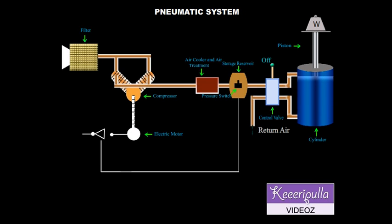In the raised position of the control lever, the bottom port is connected to the pressure line. The piston moves up and the weight is lifted. Air on the other side of the piston is vented out.